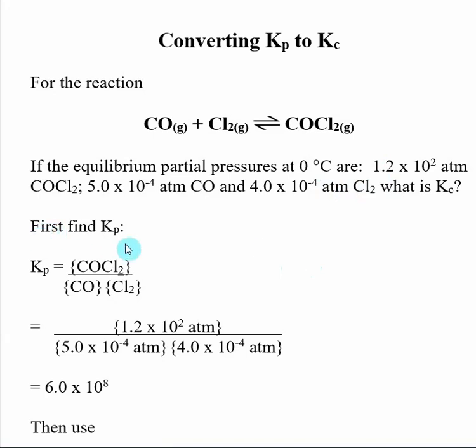So the first thing I'm going to do is find Kp. I start off with my equilibrium expression, so I have my reaction products divided by reactants. And then I plug in my equilibrium concentrations. In this case, this is in atm, so I plug in the concentrations for COCl2, CO, and Cl2.